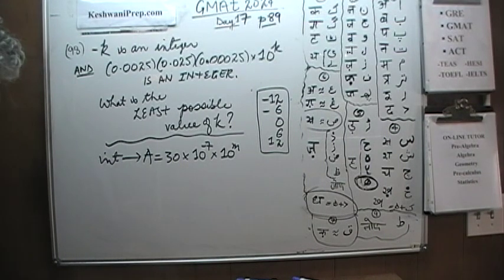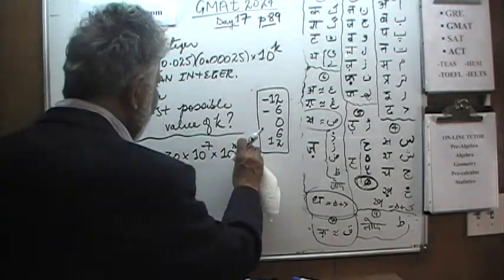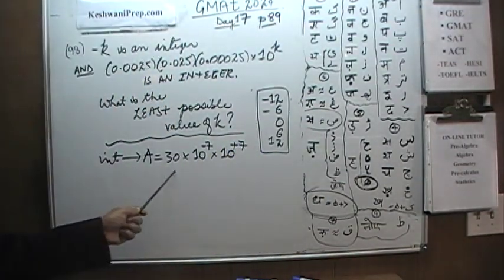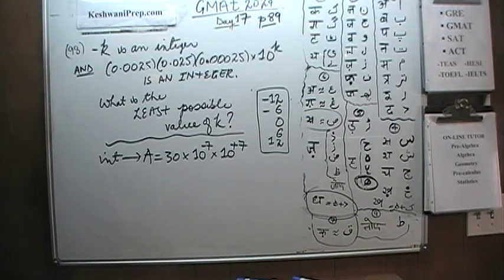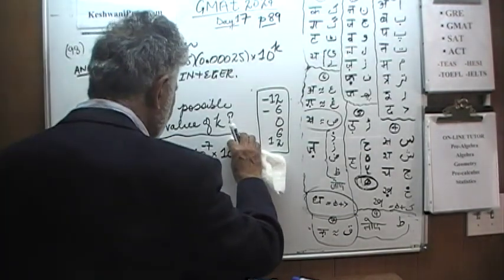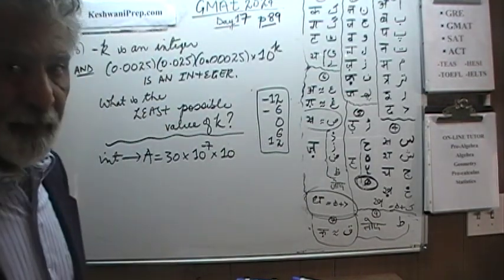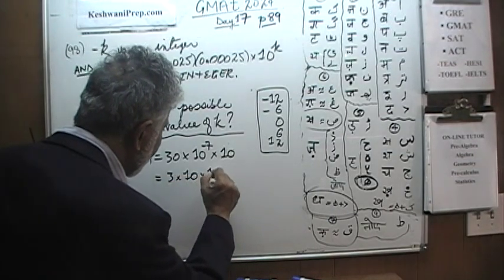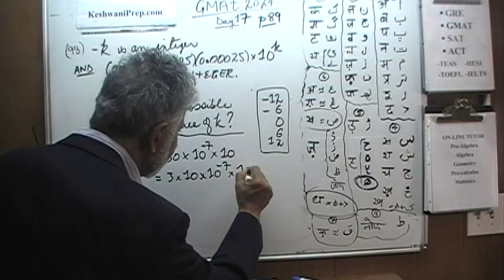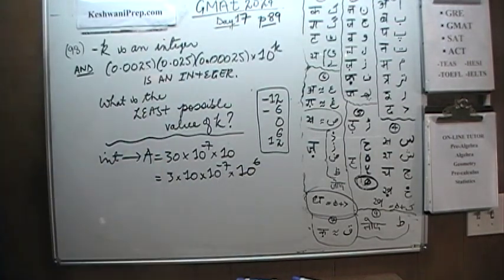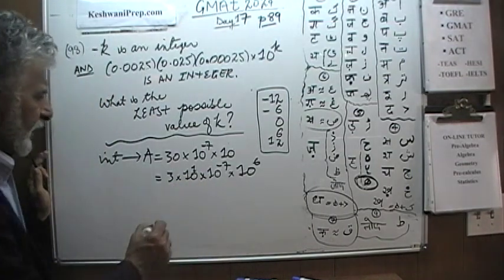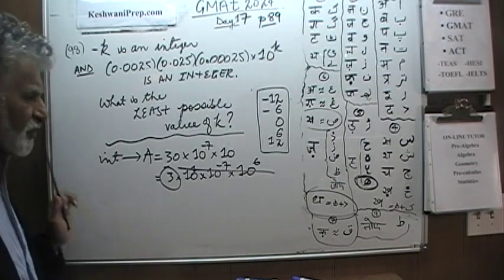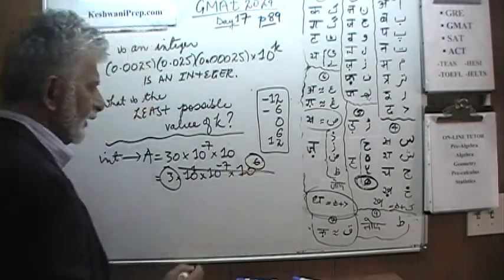We could claim that M is 7 — if M is 7, A will become 30. But that is not the least possible value. To find the least possible value, we write 30 as 3 times 10. That gives us 3 times 10 raised to negative 7, and now we only need 10 raised to 6. So the smallest possible value of M is 6, not 7.